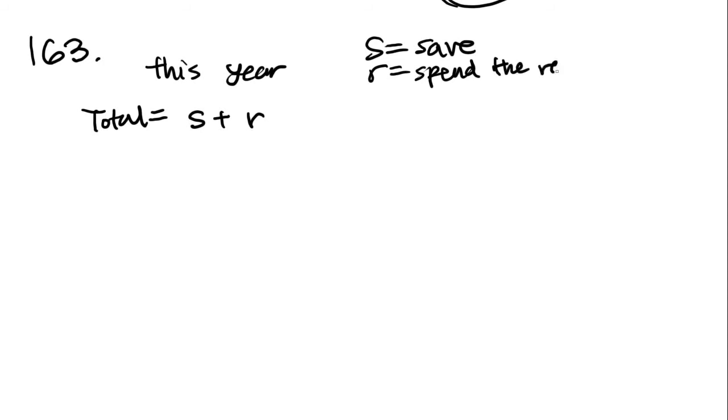163. This year, Henry will save a certain amount of his income, and he will spend the rest. So this year, Henry is going to save a certain amount, and then he will spend the rest. So total equals save plus rest, s plus r, r for the rest. S equals save, r equals spend the rest. So total equals s plus r.